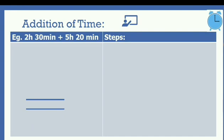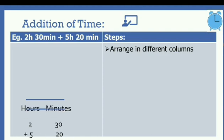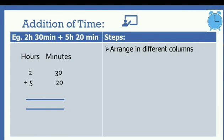Example: 2 hours 30 minutes plus 5 hours 20 minutes. Let's see the steps. First, we are going to arrange in different columns — columns of hours and minutes — because they are different units, the same way as we have done in measurement before. So 2 hours 30 minutes and 5 hours 20 minutes are arranged in different columns.